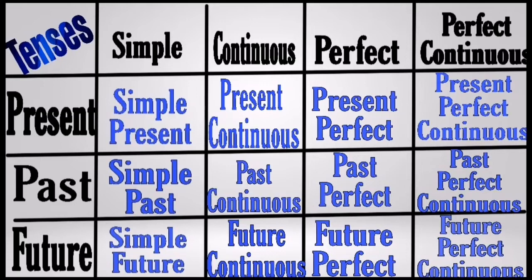The next type is continuous tense. We use continuous tense to talk about an unfinished event. Always remember, in continuous tense we have to use '-ing.' The subdivisions are: present continuous, past continuous, and future continuous.